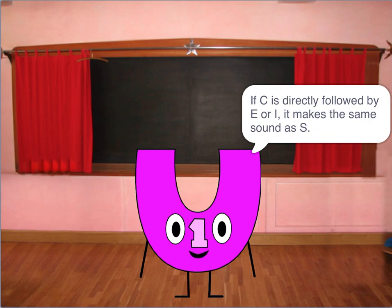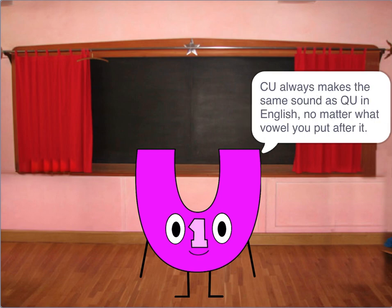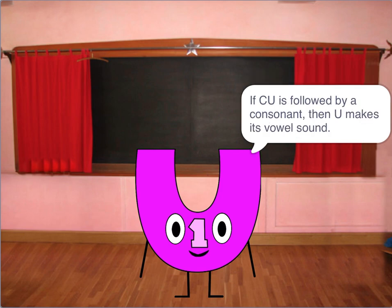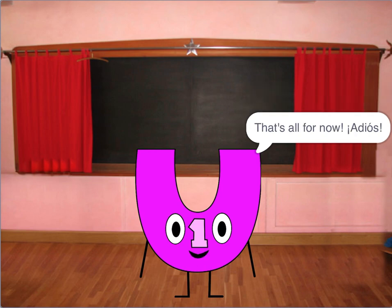If C is directly followed by E or I, it makes the same sound as S. If C is directly followed by A, O, or a consonant, then it makes its hard sound. QU always makes the K sound and it never precedes E or O directly. QU always makes the same sound as K in English, no matter what vowel you put after it. If CU is followed by a consonant, then U makes its vowel sound. And the letter R never comes after C. That's all for now. Adios!